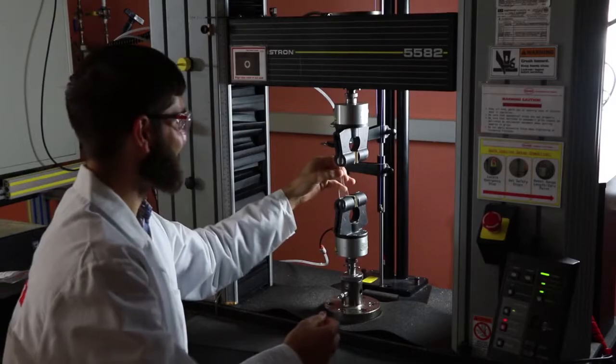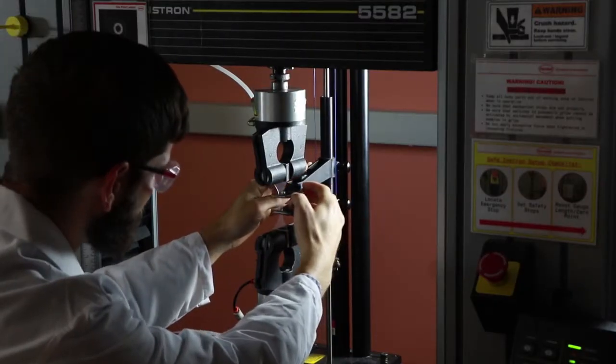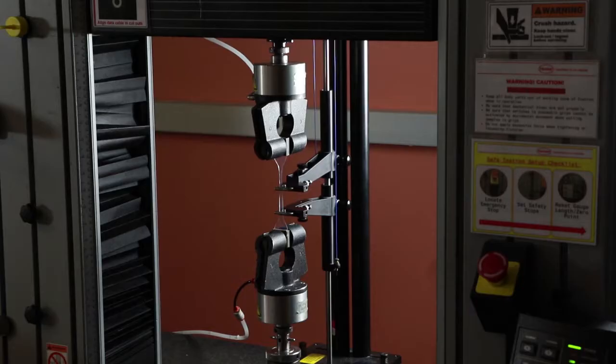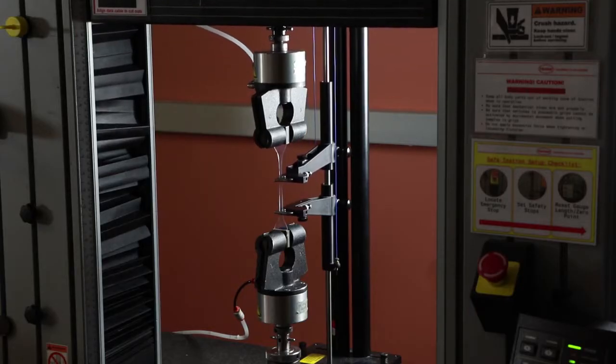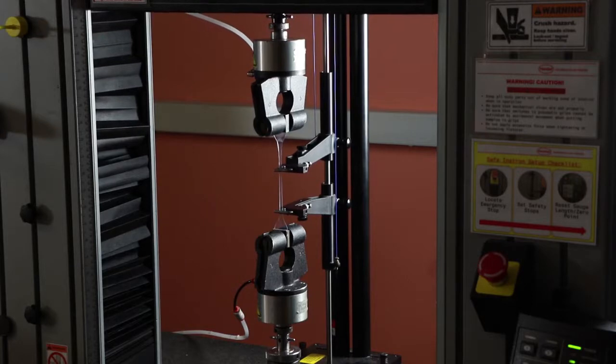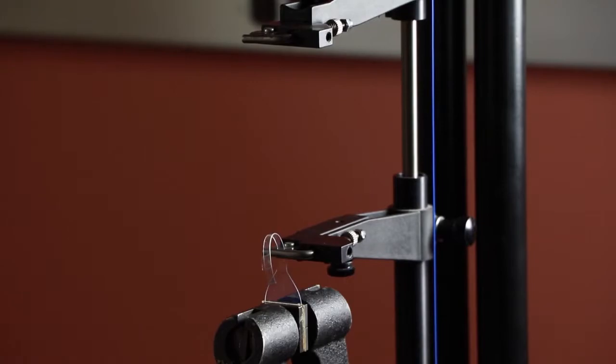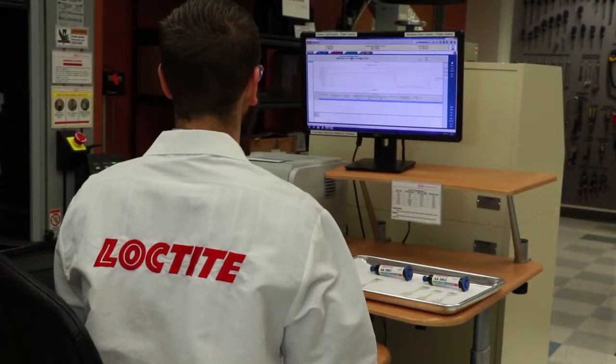The elongation percentage of the adhesives is tested using an Instron Mechanical Properties Tester equipped with an extensometer. The elongation is tested as the dog bones are pulled in tensile mode until they break. The percentage of stretch or elongation is recorded.